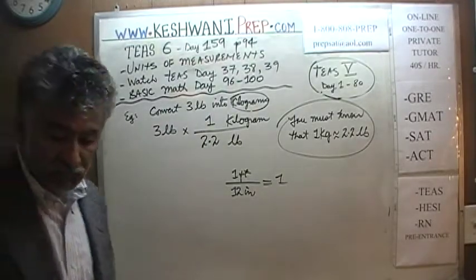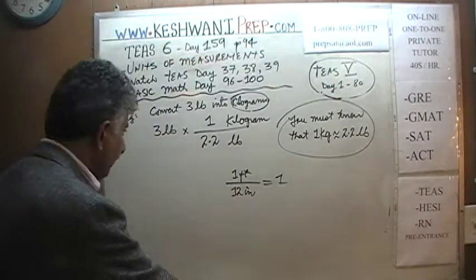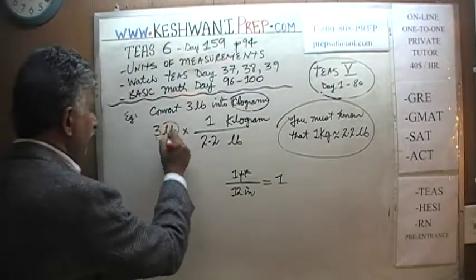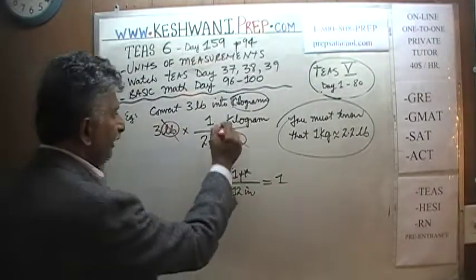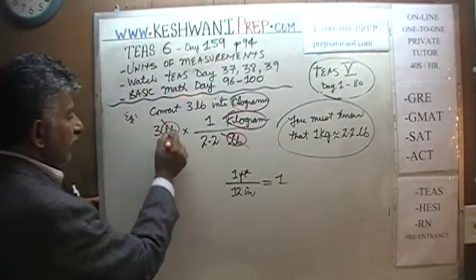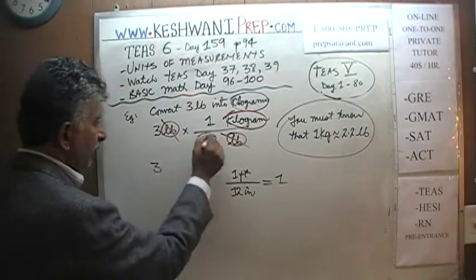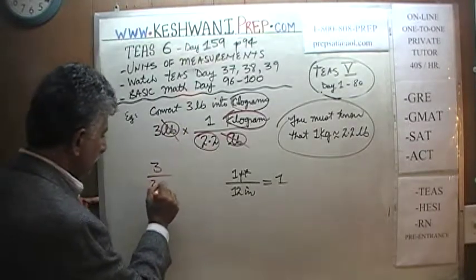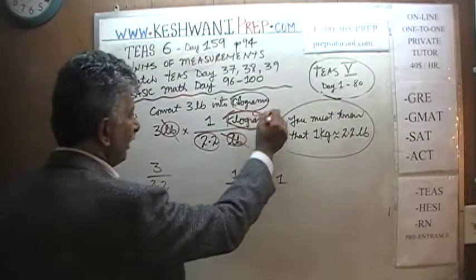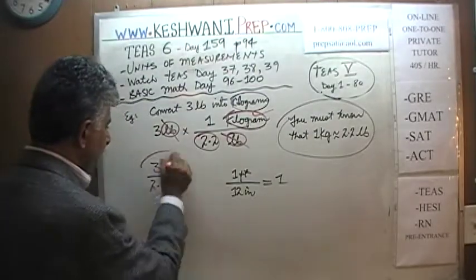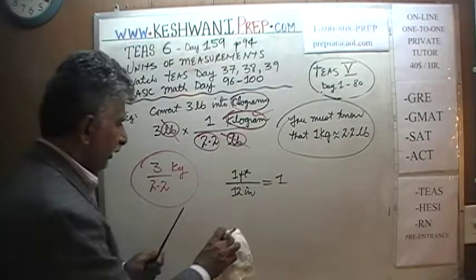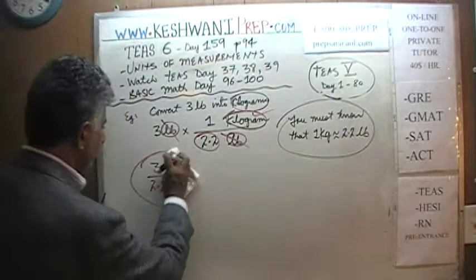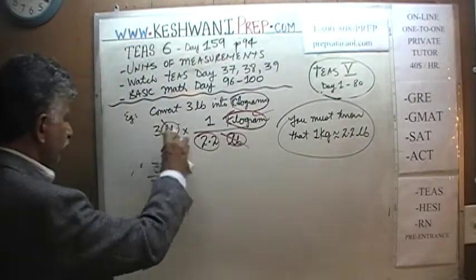Why are we doing it? Because it allows us to convert the units. Now we have pounds on the top and pounds on the bottom — the pounds cancel out. We are left with kilograms on the top. 3 times 1 is 3, and on the bottom we have 2.2, with kilograms as the remaining unit. We have to figure out the value of 3 divided by 2.2 — let's do it together.